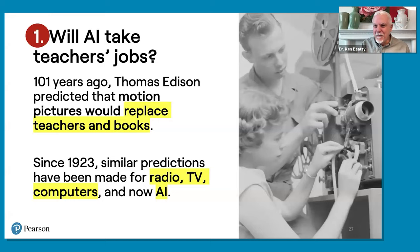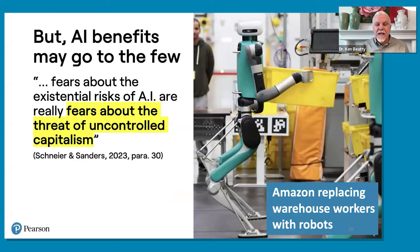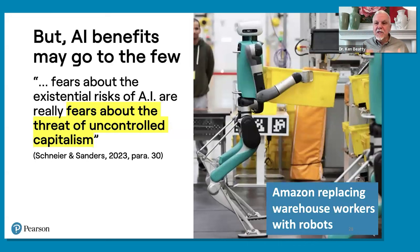AI benefits, if they do come, tend to go to the few. We see this picture of a robot at an Amazon warehouse replacing workers. Will the company pay the workers more or give the profits to workers? No, they won't. This is the fear of uncontrolled capitalism — that teachers or anybody will be replaced, and the benefits will not go to the teachers but to somebody else.